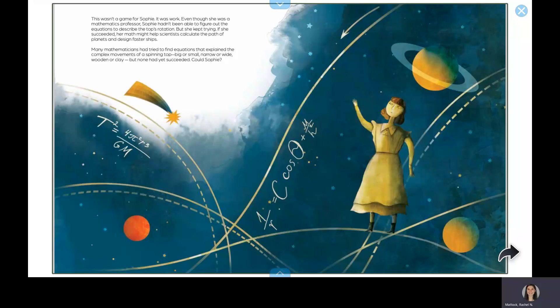Many mathematicians had tried to find equations that explained the complex movements of a spinning top, big or small, narrow or wide, wooden or clay, but none had yet succeeded. Could Sophie?